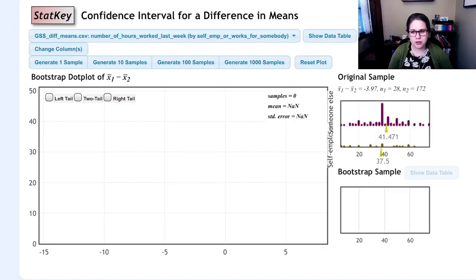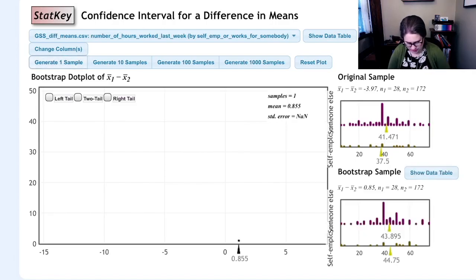If we click the button and generate one sample, we would take a bootstrap sample with replacement from the original sample. We'd still have 28 in the first group and 172 in the other group, but we're going to get slightly different means.